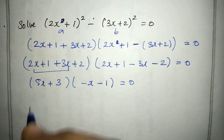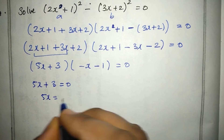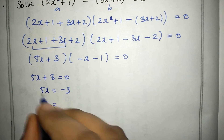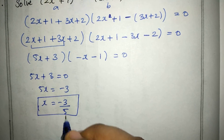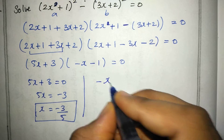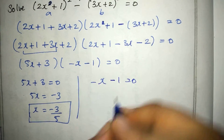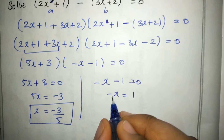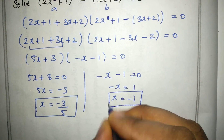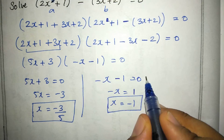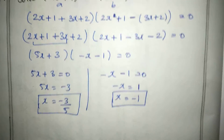Solving the first factor: 5x + 3 = 0, so 5x = −3, giving x = −3/5. Solving the second factor: −x − 1 = 0, so −x = 1, giving x = −1. Therefore x = −3/5 and x = −1 are the solutions.